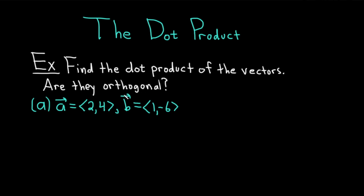Two vectors are orthogonal if their dot product is zero. If we get zero as an answer, that means the vectors are orthogonal. If we don't get zero, that means they're not orthogonal. By the way, orthogonal means the same thing as perpendicular.